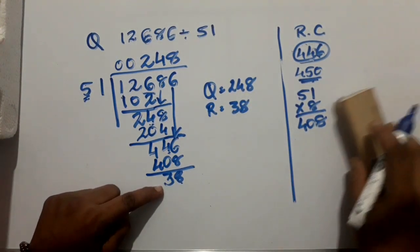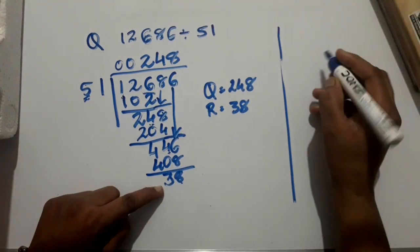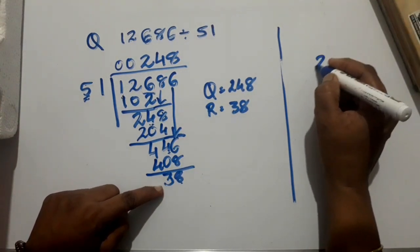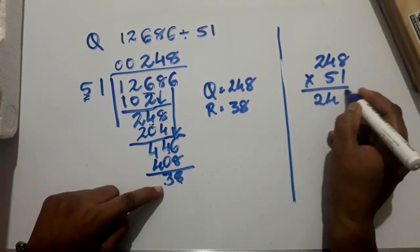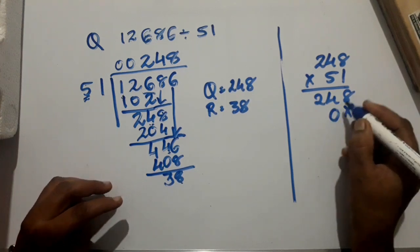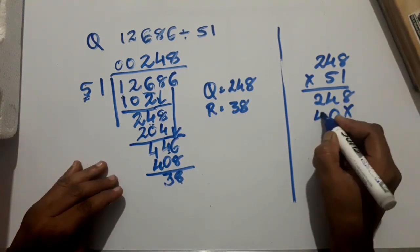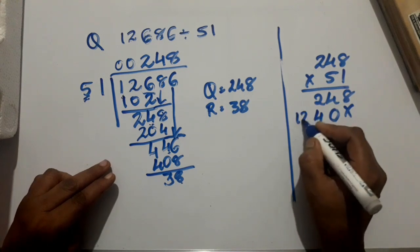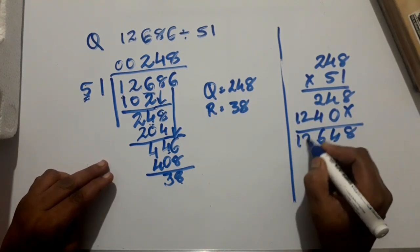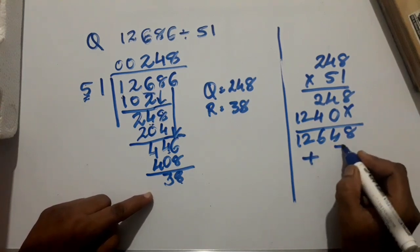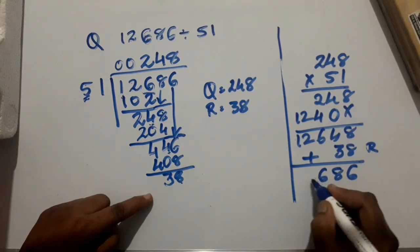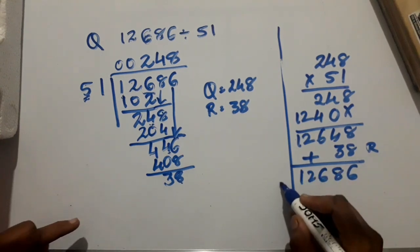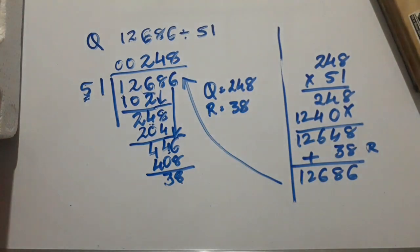Now verify the answer. Multiplying quotient by divisor and adding the remainder should give the dividend. Adding remainder 38 gives 12,686, which is your dividend. The answer is verified.